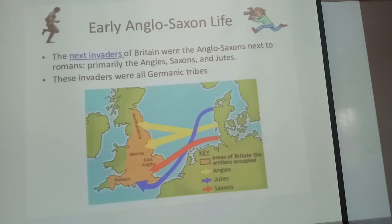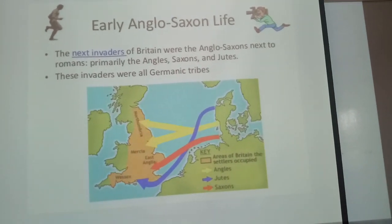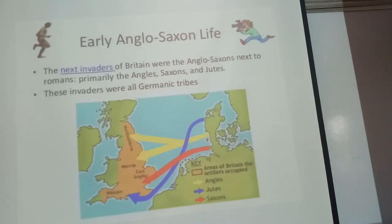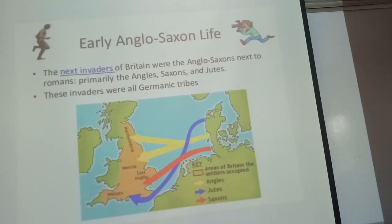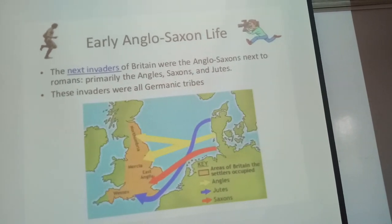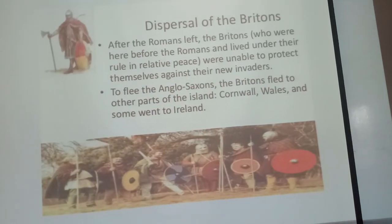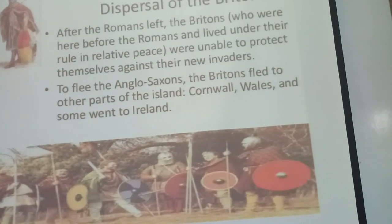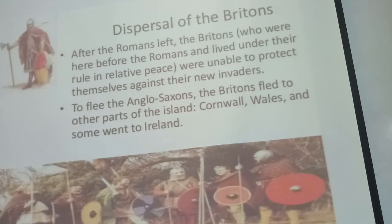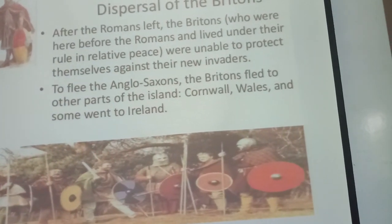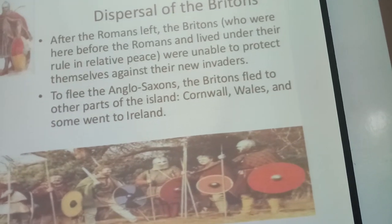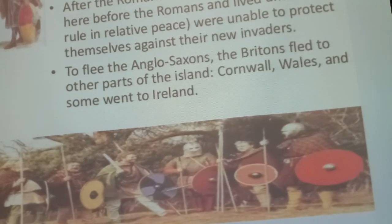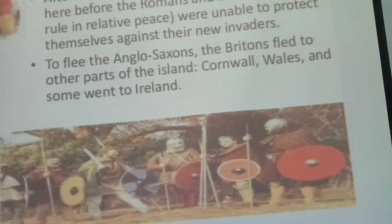Early Anglo-Saxon life: the next invaders of Britain after the Romans were the Anglo-Saxons — primarily the Angles, Saxons, and Jutes. These invaders were all Germanic tribes. After the Romans left, the Britons who had lived under Roman rule in relative peace were unable to protect themselves against these new invaders. To flee the Anglo-Saxons, the Britons fled to Cornwall, Wales, and some went to Ireland.